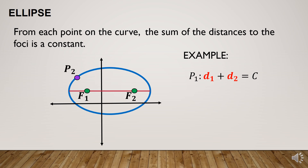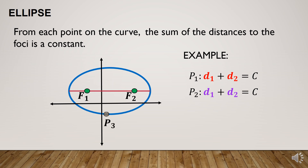Let us now consider another point. From point 2 to f1, that is d1. If we add this, the result is still the constant c. Let us now consider another point. The distance from point 3 to f1 is d1, and the distance from point 3 to f2 is d2. Again, d1 plus d2 is still equal to c.